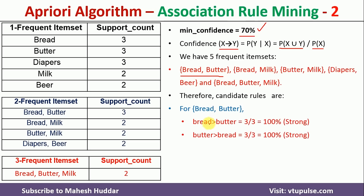Starting with bread and butter: the two possible rules are bread → butter and butter → bread. Bread and butter were bought together 3 times; bread appears 3 times. So 3/3 = 100% — it is a strong rule. For butter → bread: butter and bread were bought together 3 times; butter appears 3 times. So 3/3 = 100% — again a strong rule.